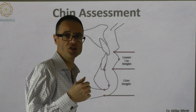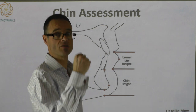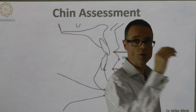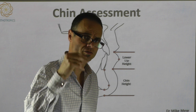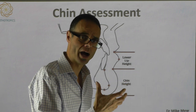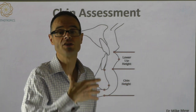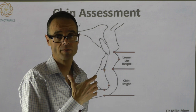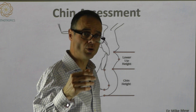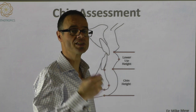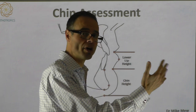We know that when teeth erupt, they erupt and march forwards — that was quite clear from Bjork's work, looking at x-rays over time as people develop. So if those teeth are going to march forwards, anything that would have prevented them from doing so, anything that held back the entire lower dental arch, may explain some class two dental relationships — simply a lack of forward progression of the lower teeth.